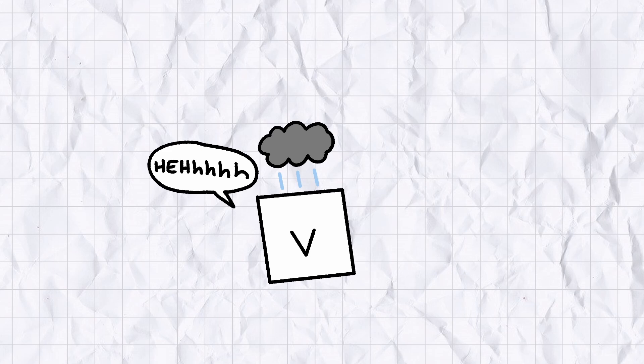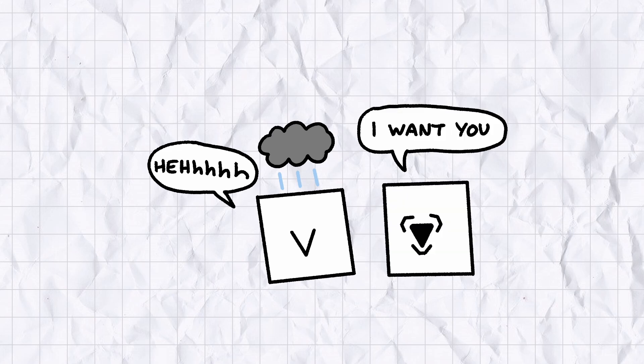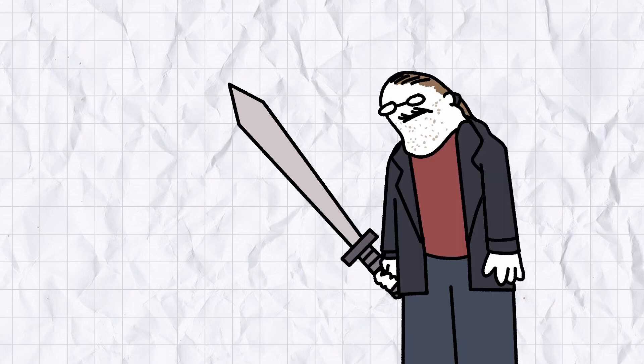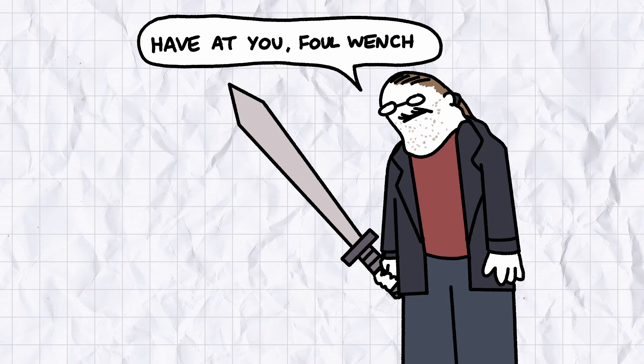On its own, vanadium metal doesn't have many uses, but it's invaluable as an alloying component in steel. Vanadium steel is strong, rust resistant, and has high tensile strength, making it an excellent material for the overpriced saws they sell to men with very normal opinions on giving women the right to vote.